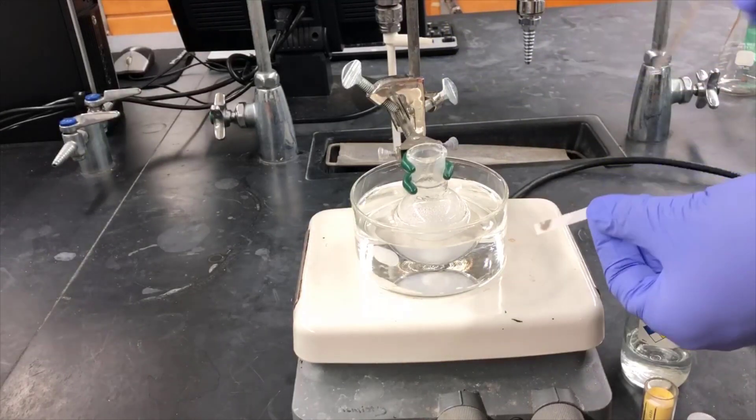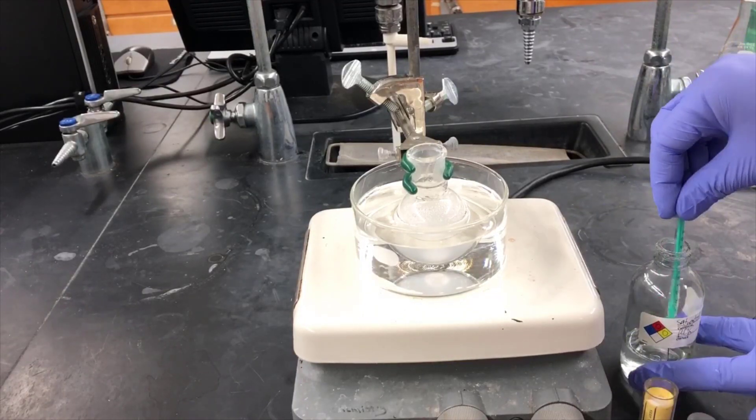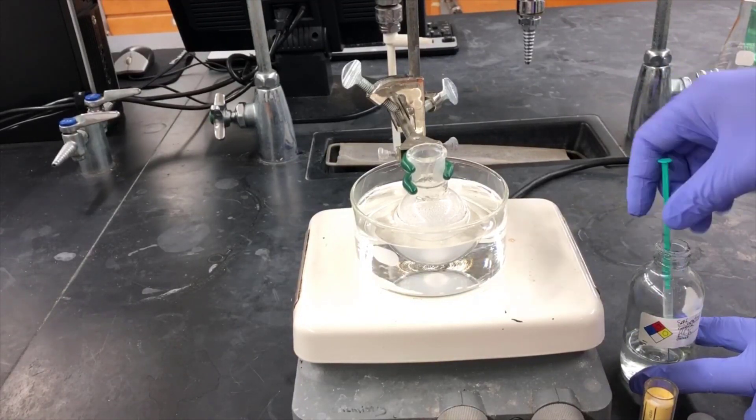From the black color on the test strip, it's clear there's still hypochlorous acid present, so I'll add another 0.5 milliliters of the saturated sodium bisulfite solution and test again.